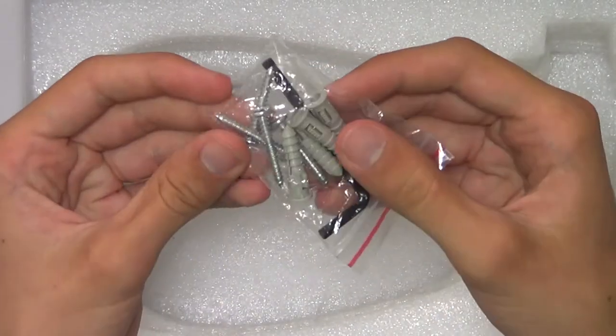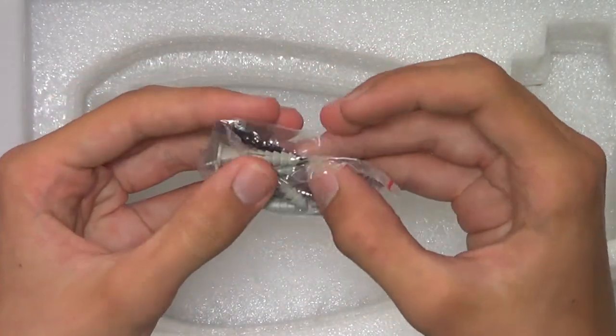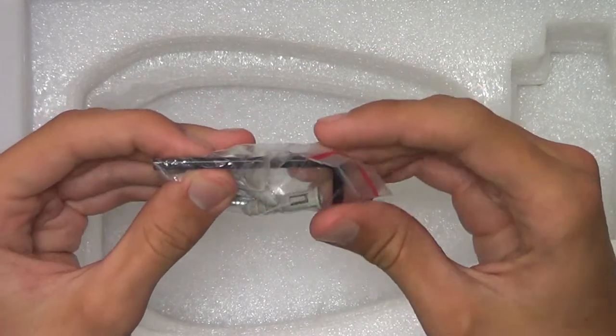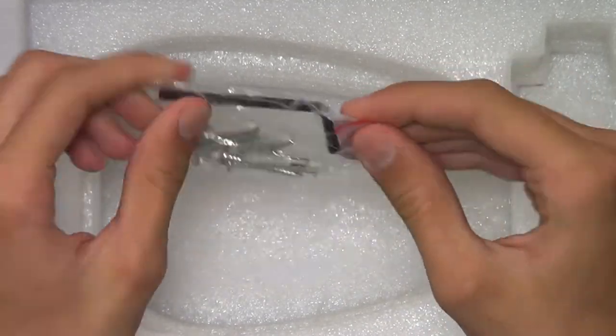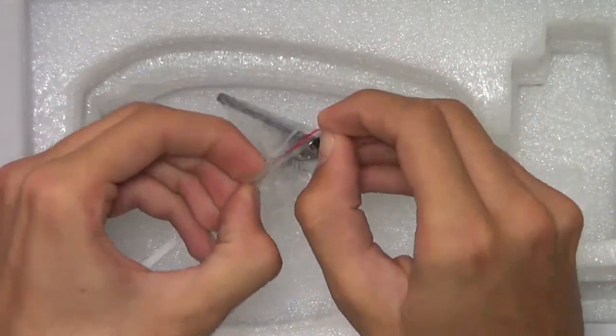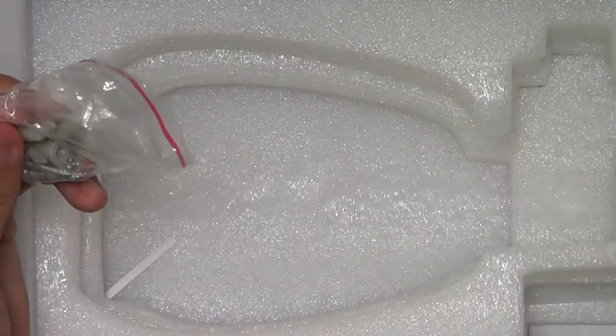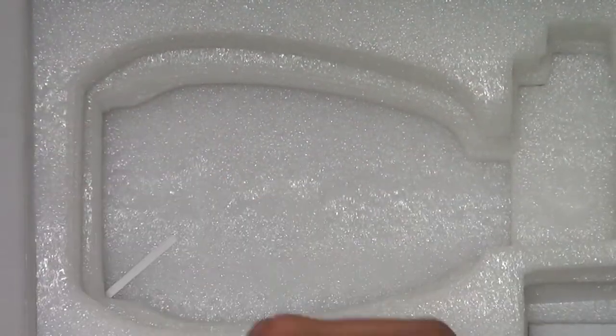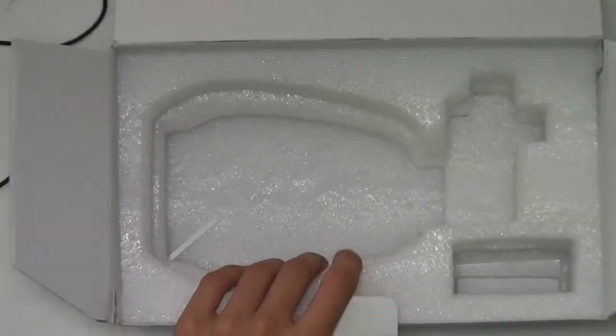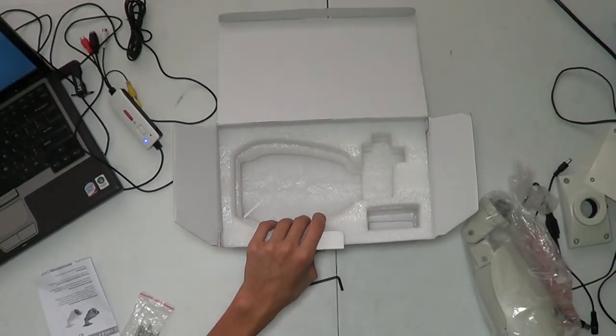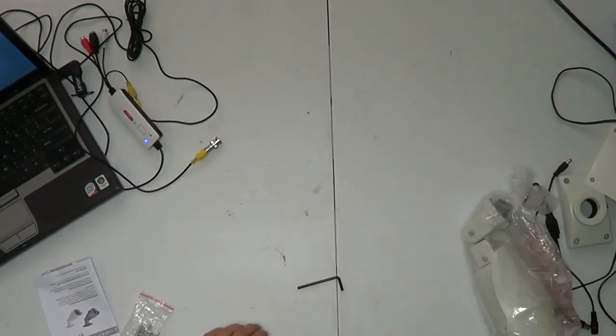What else do we have here? We have four anchors and four screws for the mounting stuff, and this Allen wrench, which I'm going to go ahead and take out. Sort of important to us. So we'll get the packaging out of the way here.